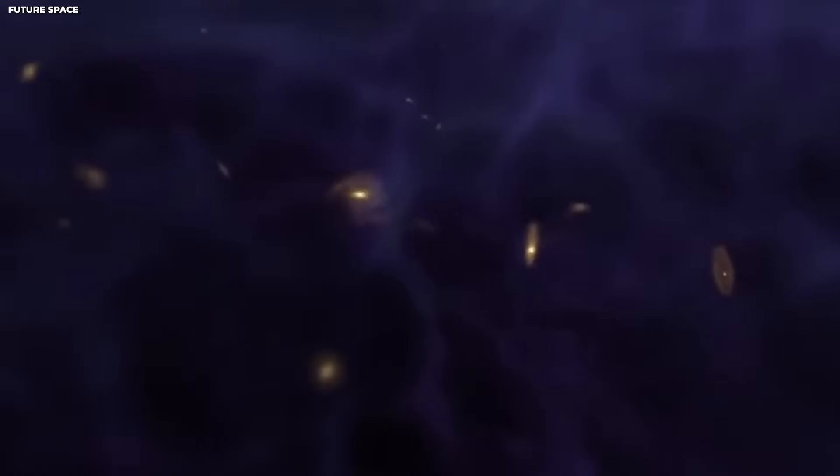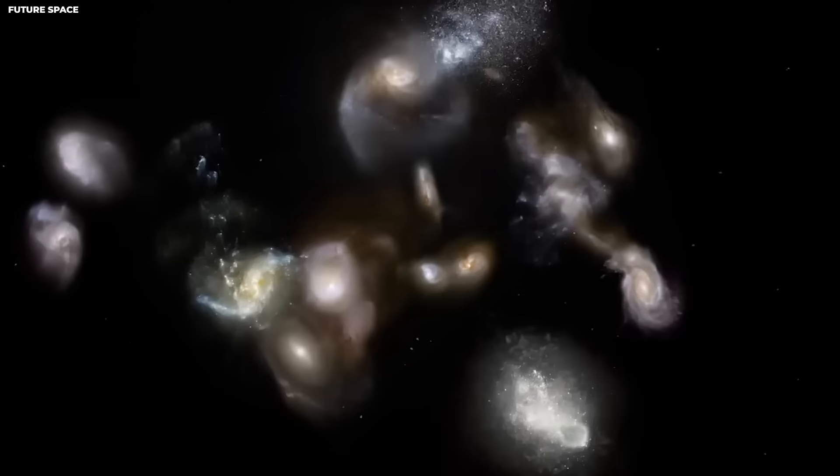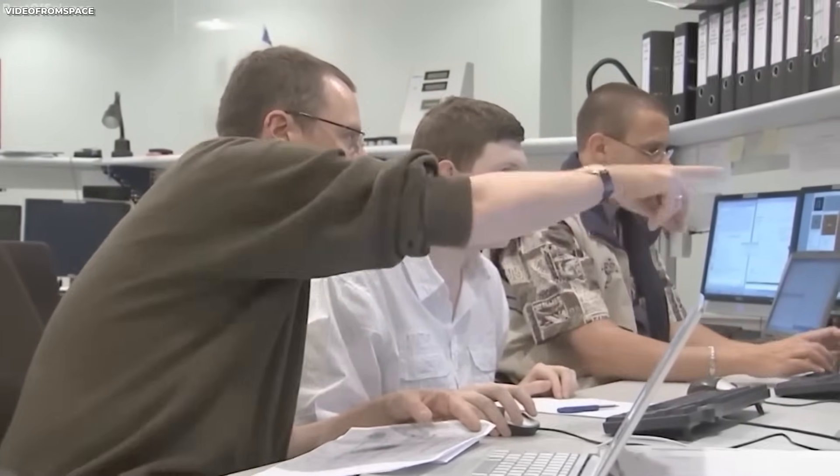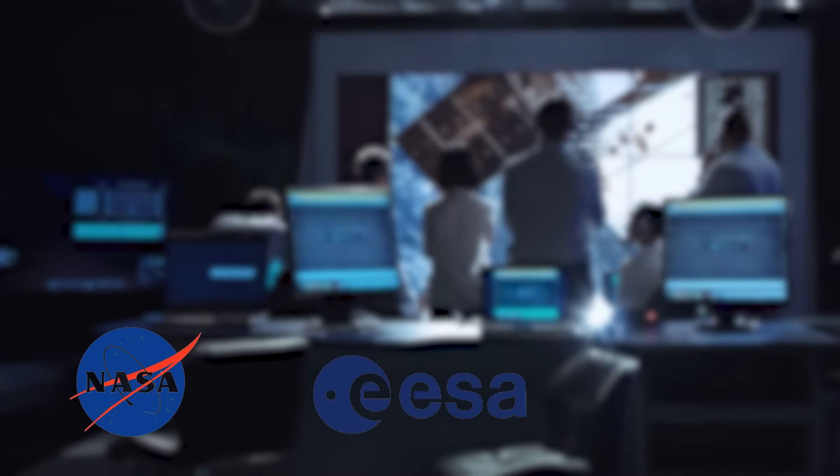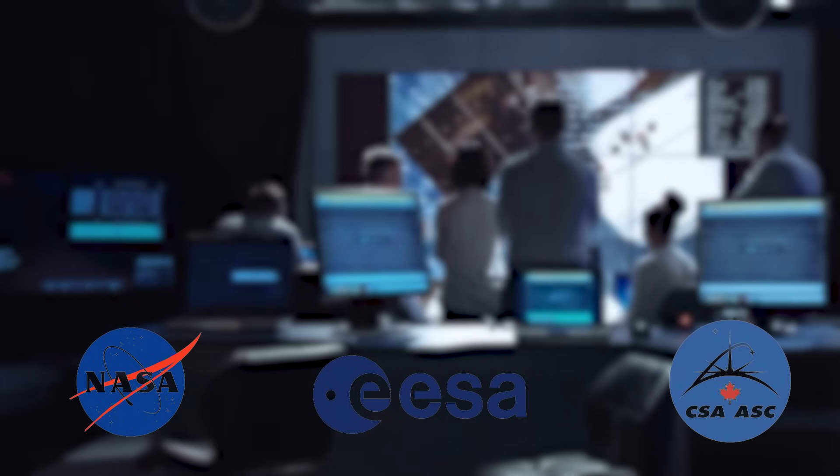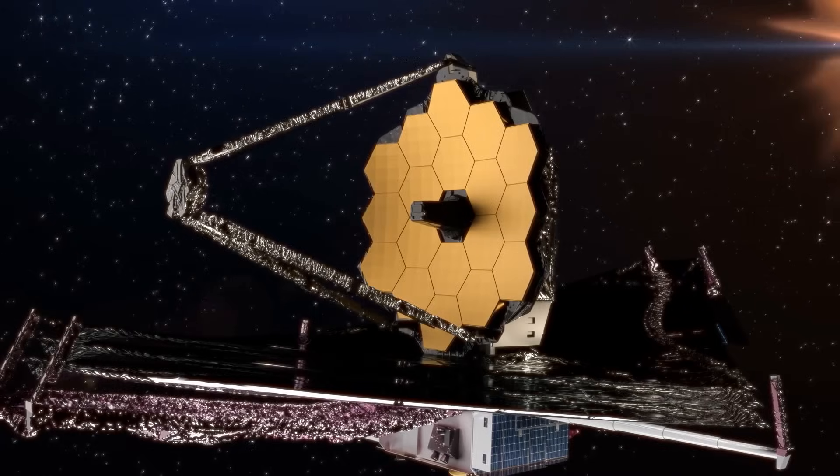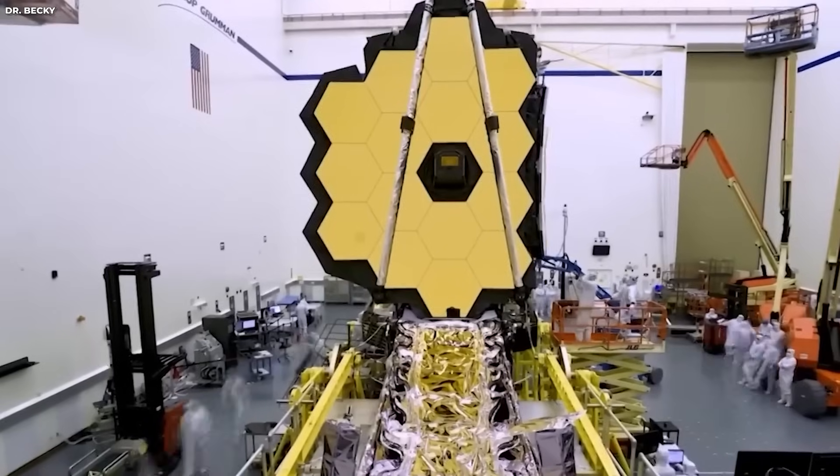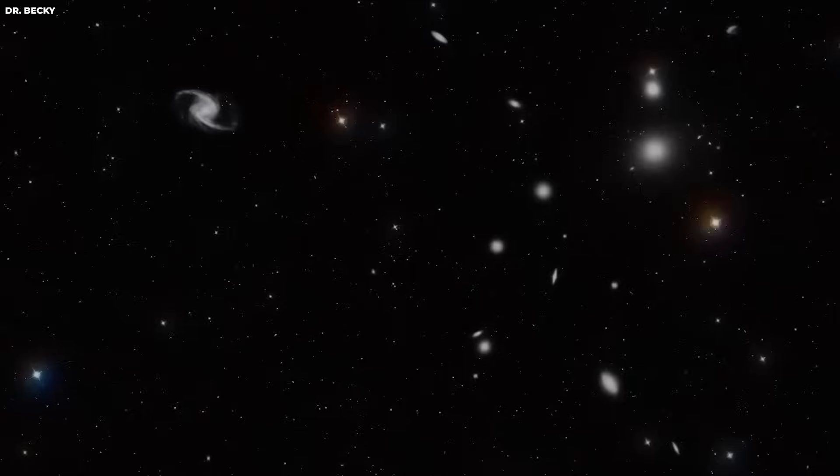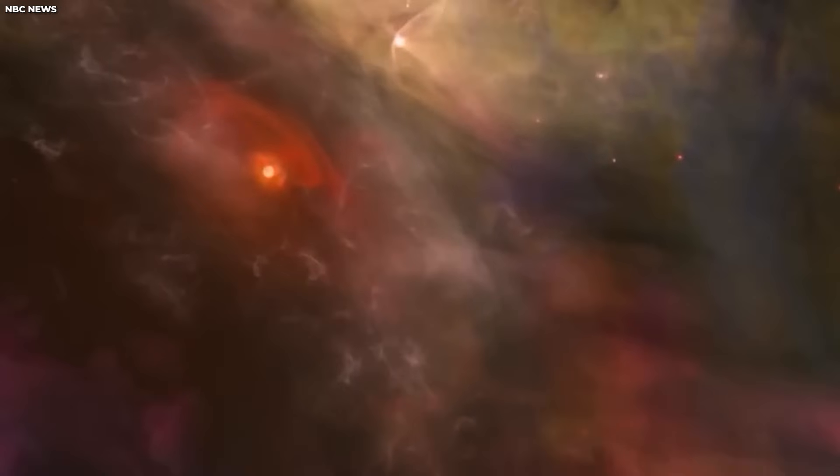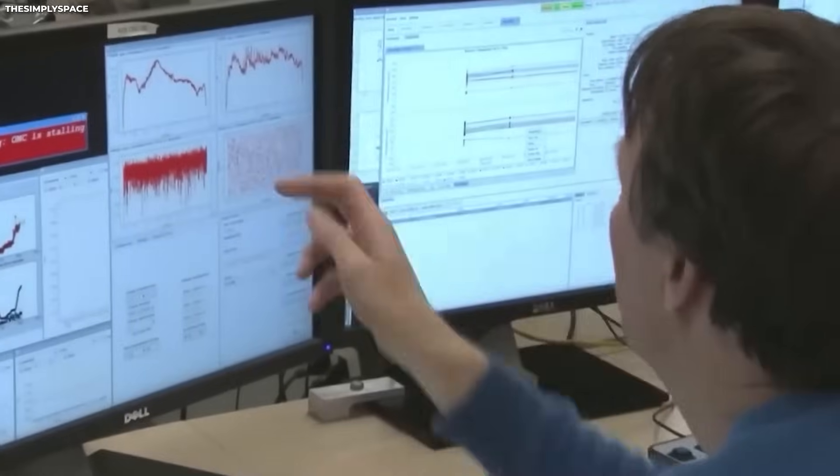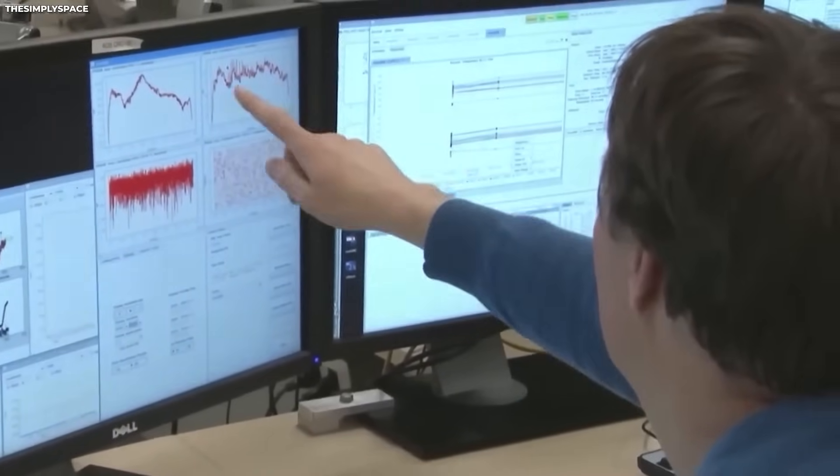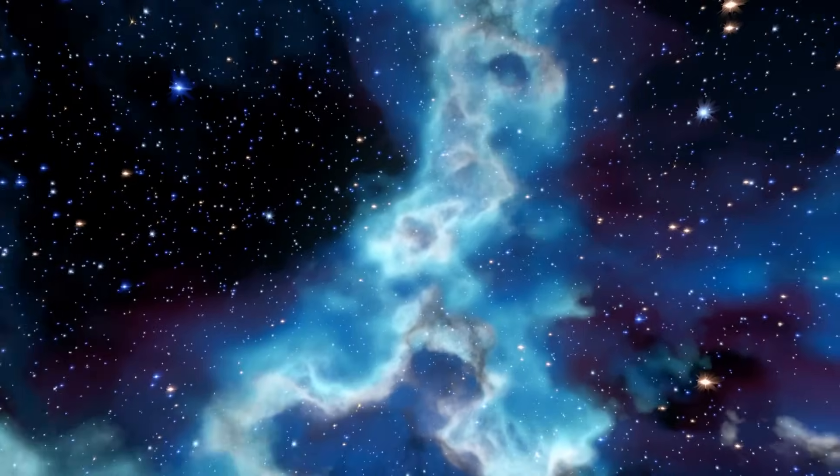When the Hubble Space Telescope unveiled the distribution of dark matter in galaxy clusters, it seemed like one of the greatest scientific discoveries. However, that perception changed when NASA, in collaboration with the European Space Agency and the Canadian Space Agency, launched an extraordinary scientific instrument to observe the evolution of galaxies, stars, and planetary systems. Presently, scientists worldwide are both excited and astonished by its latest findings.